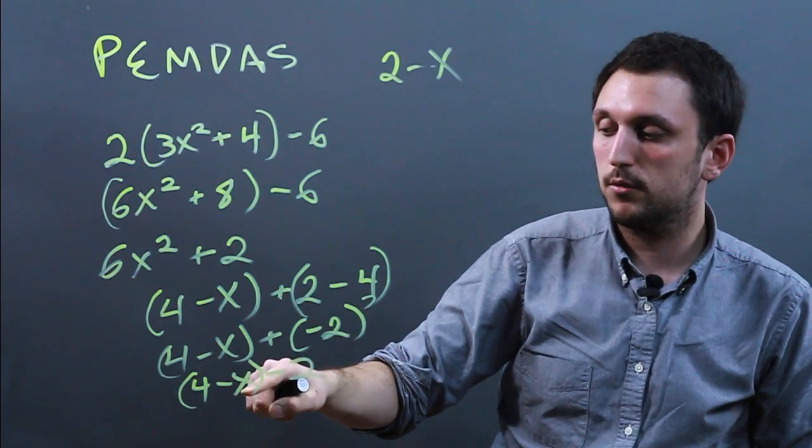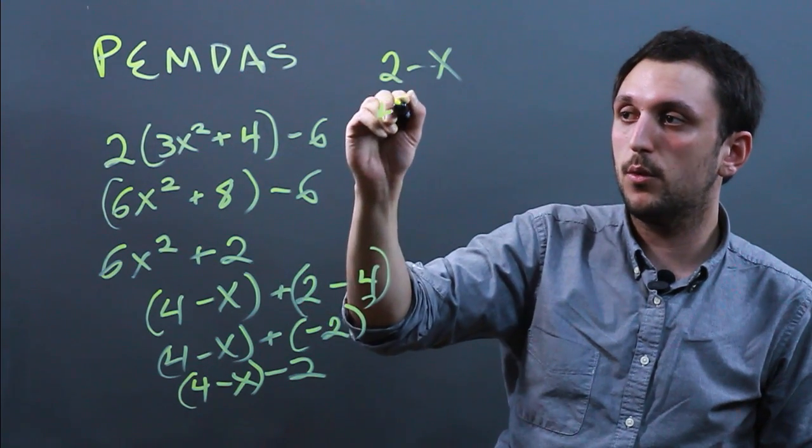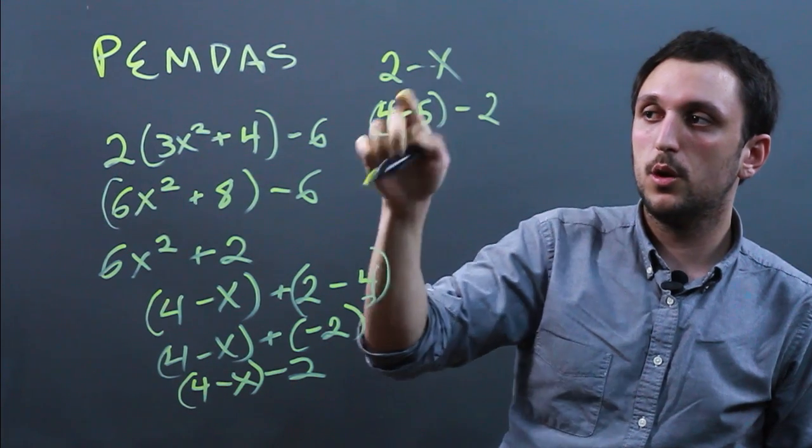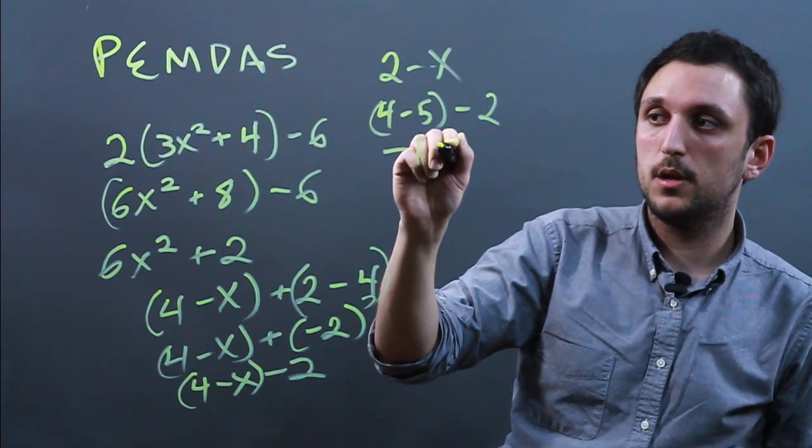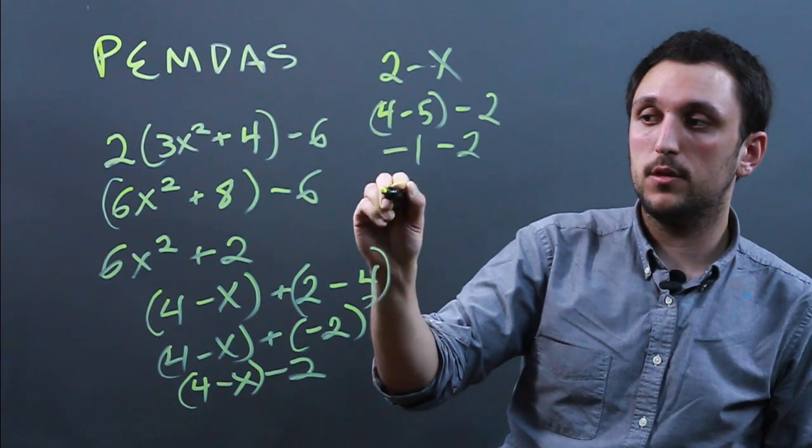However if this were a number, say 5, we would say 4 - 5 - 2 which is negative 1 minus 2 which is negative 3.